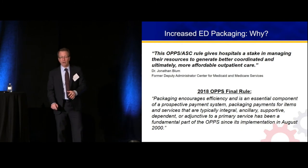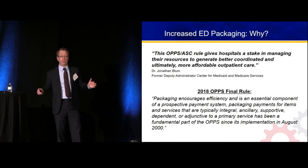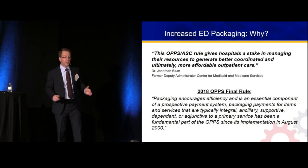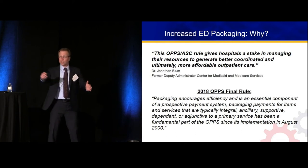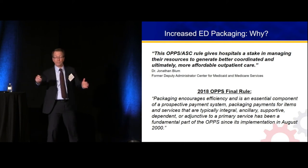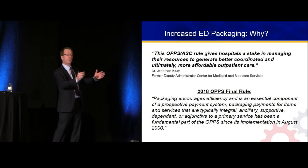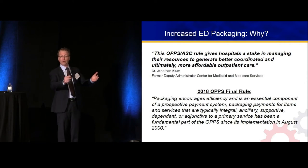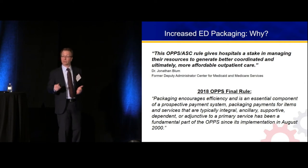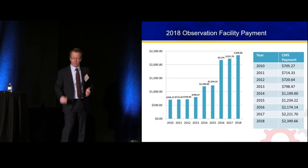The federal government is saying: we're going to take all of the costs, subtract 7–8%, and give you a lump sum payment at the geometric mean cost. You figure it out — just do a better job.